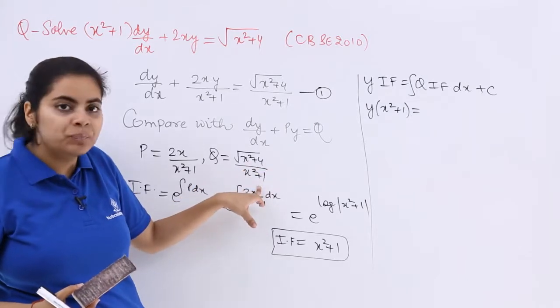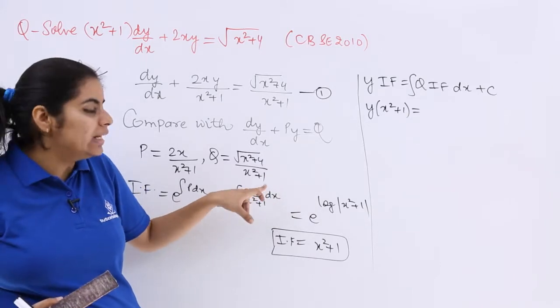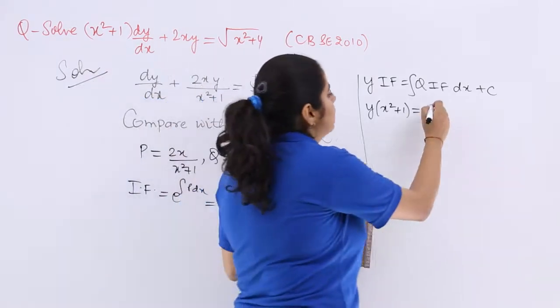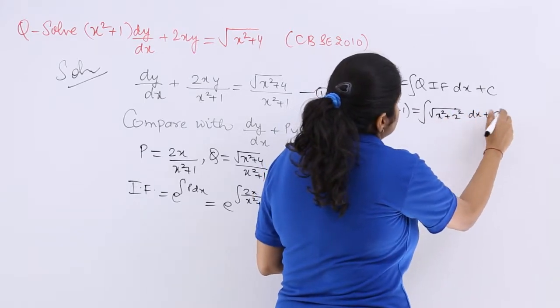My q is this thing × integrating factor x²+1. So numerator, denominator getting cancelled, only one term left. √(x²+4) dx + c.